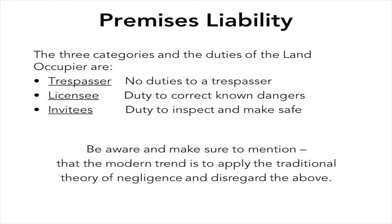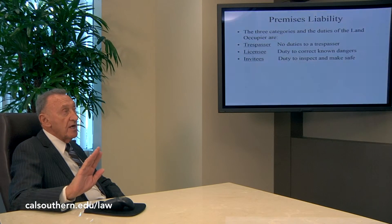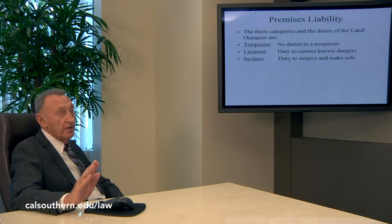Premises liability has three categories and the duties of the land occupier. To a trespasser, the land occupier has no duties. To a licensee, the duty is to correct known dangers. But to invitees, which is the highest category, there is a duty to inspect and make safe the premises for the invitee.